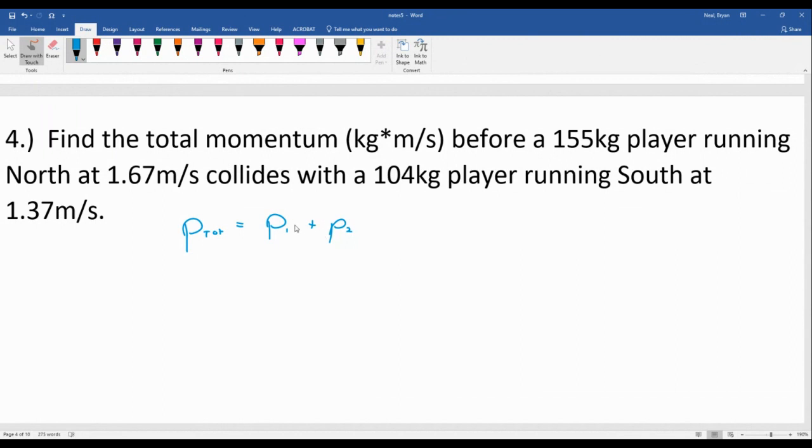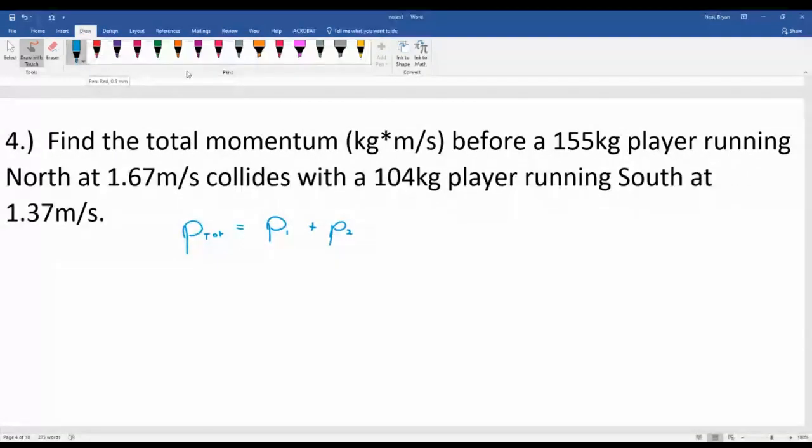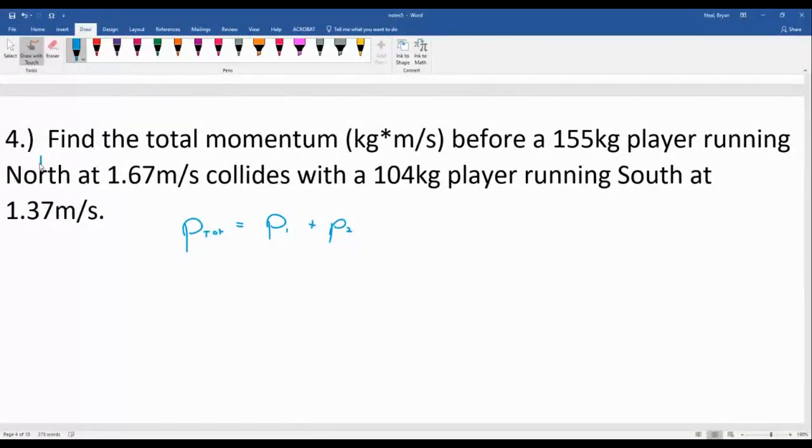Okay. So we do have to be careful here because these separate momenta can work against each other. Notice that one person's running north and one person's running south. So we do need to pay attention to integers and signs. Typically, we would say that north is positive and south is negative just because it's up and down if we're looking at a map. You can decide the opposite of that. As long as you're consistent, you'll still get the same answers.